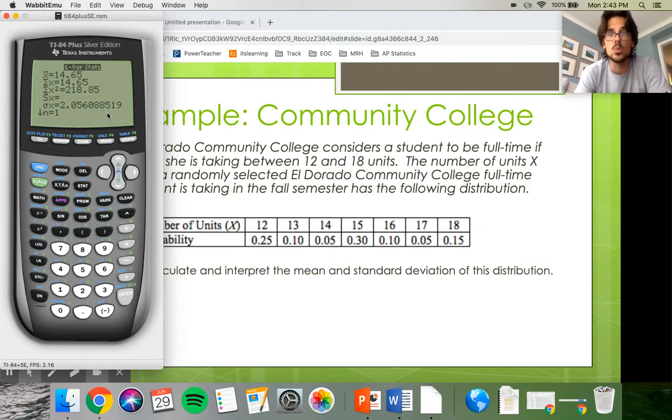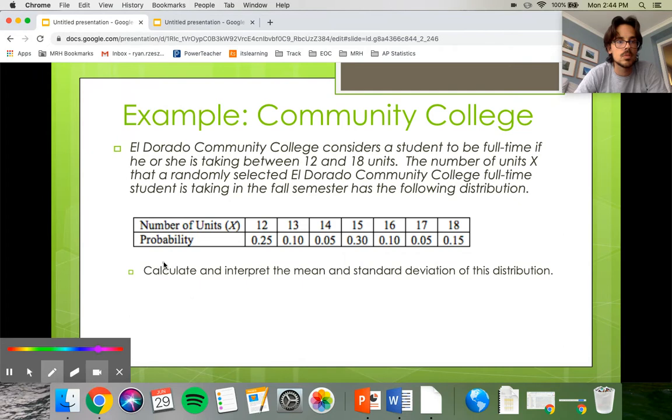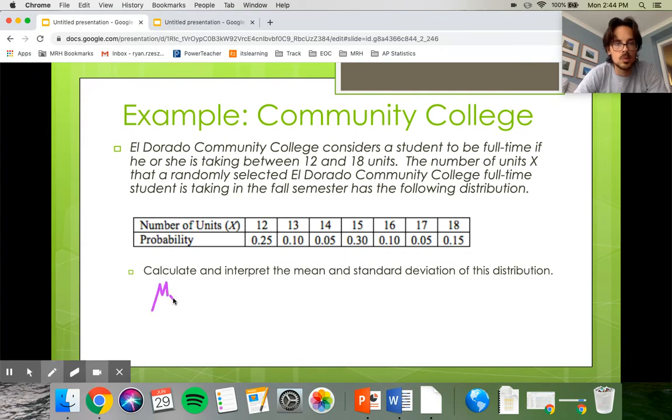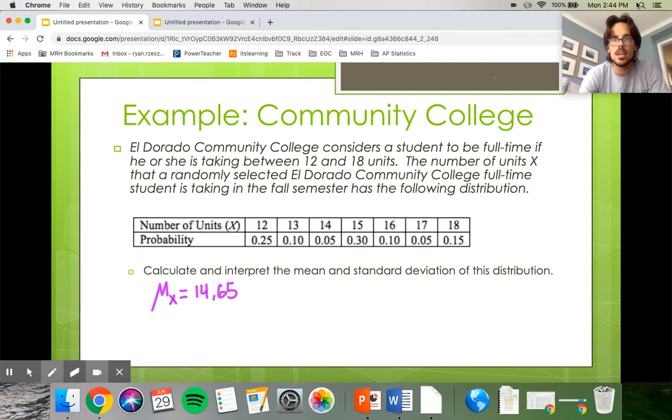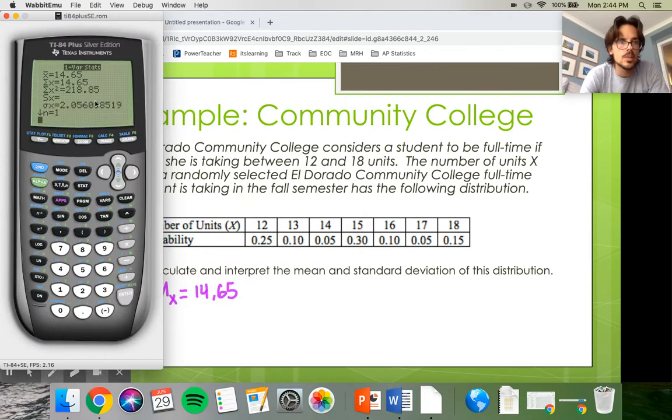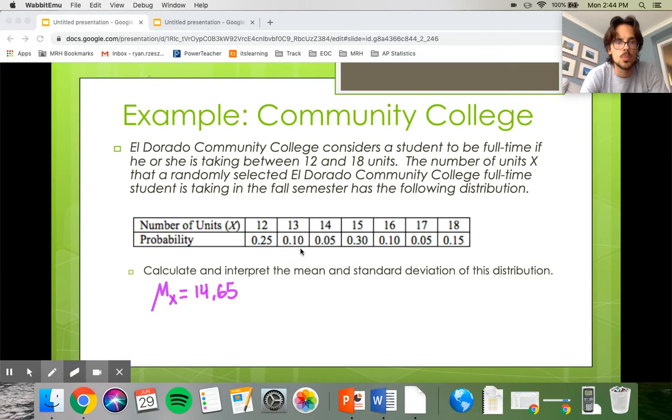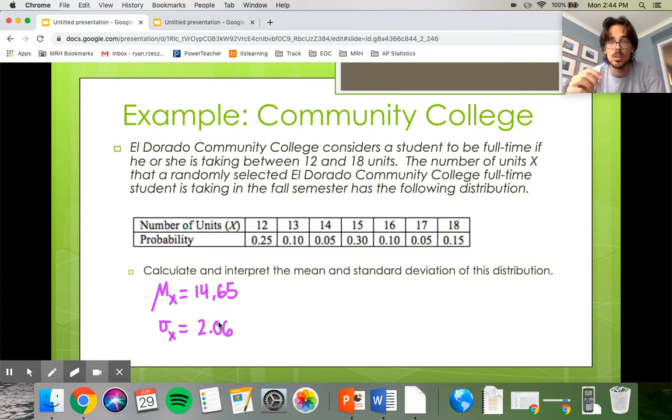If this was a quiz question, you would need to show me some work on both of those. But for the purposes of this lesson right here, I'm just going to go ahead and copy those down. So my mean in this problem was a 14.65. And we already have the variable X for this one. So I'm going to say mu of X is 14.65. And the standard deviation on that same data set was a 2.06, if I round that. So 2.06 for my standard deviation. It also asked us to interpret our standard deviation and our mean in this problem. So this would be a great chance to pause the video and try that out for yourself.